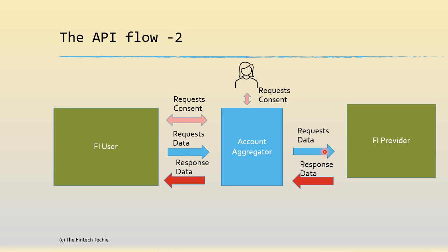An important thing to note is that these are all open APIs because they are on the public internet, but they are heavily encrypted due to the sensitive nature of the data. The request API is not a synchronous call — it is an asynchronous API call to the provider. Once the provider retrieves the data from its internal system, it notifies back and the data is passed on to the FI user. The channel is encrypted, the data is encrypted, and your data is completely secure. The account aggregator acts as a postman — it does not store any data within itself; it is just a pass-through mechanism.